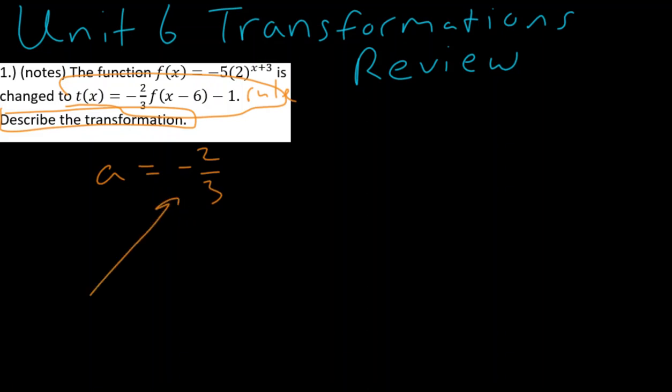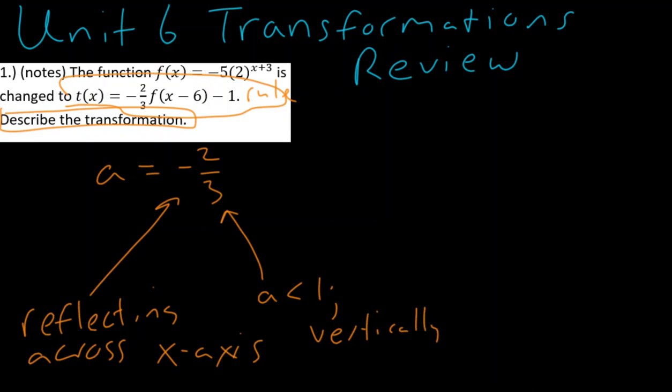And what do I know? Well, I know that my negative is telling me that we will be reflecting across the x-axis. I know that since 2 thirds, since a is less than 1, I know that this is going to be vertically compressed.